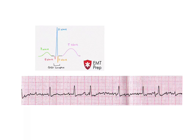The next rhythm we're going to talk about is atrial fibrillation, or AFib. AFib is a rhythm in which the atria are not fully contracting — instead they're doing something like a quiver, uncontrollably and with no discernible rhythm. As a result, there's no defined P wave anywhere on this rhythm strip. We know where the P waves should be, and we're just not seeing them.